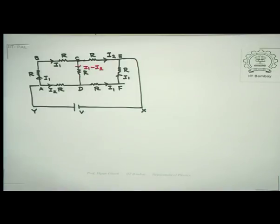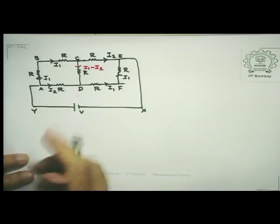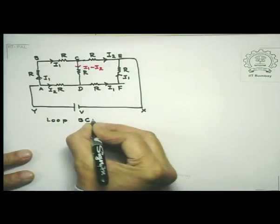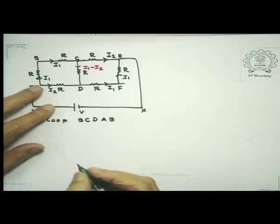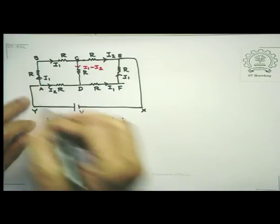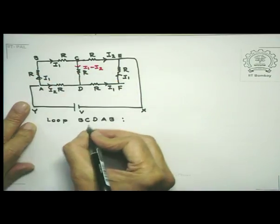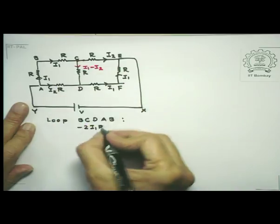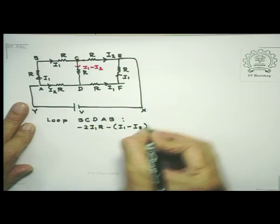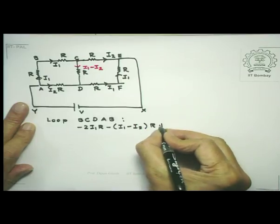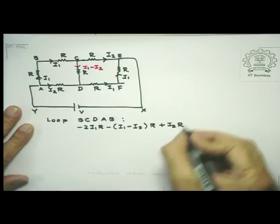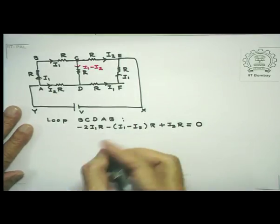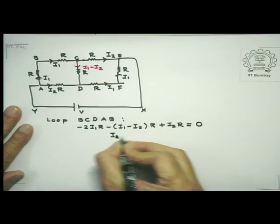Looking at loop BCDAB and applying the loop rule: minus I1·R minus I1·R minus (I1 − I2)·R plus I2·R equals 0, giving minus 2I1·R. Since there is no source in that branch, this equals zero, and simplifying gives I2 equal to (3/2) I1.